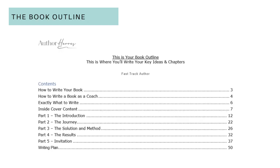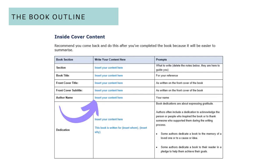I don't want you to get confused because it may sound a little confusing. We have a book planner, a mind map, a book outline, and a book template — they are all different things. This is a picture of the front page of the book outline. The book outline is a skeleton frame of the book. All you need to do is go through this book outline, download it from the resources section, and scroll through and fill in the sections that are there.